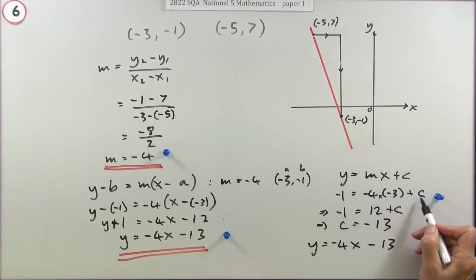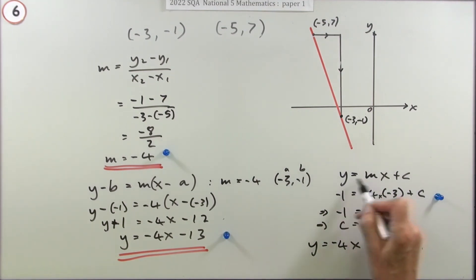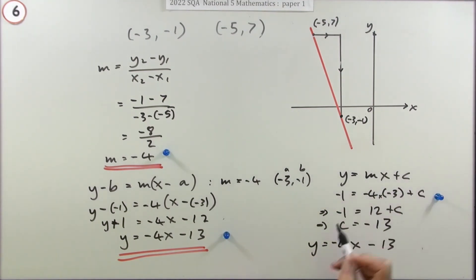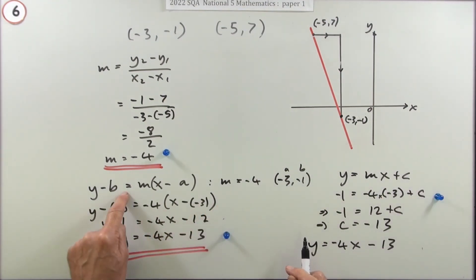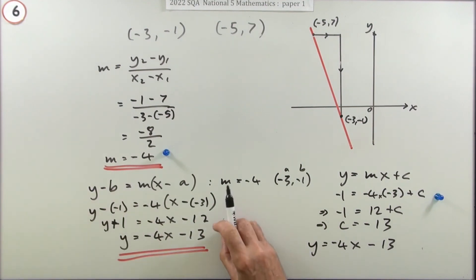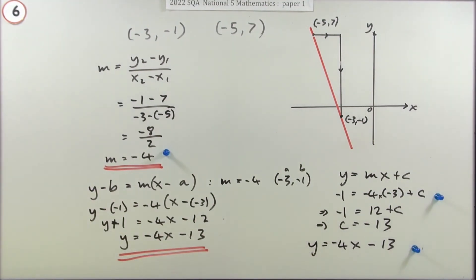One mark is awarded for substituting numbers correctly into the line equation (either form), and the final mark is for arriving at the correct simplified answer.